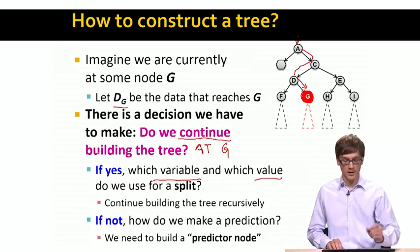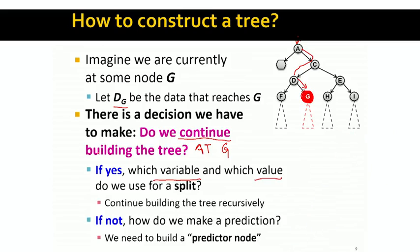If the answer to whether we continue building the tree is no, then the question is how do we make a prediction? We need to create a prediction node — a hexagonal node as we draw it — and decide how we are predicting y in this case. So if the answer is yes, we need to figure out how to create the split node. If the answer is no, we have to figure out how to build a prediction node.